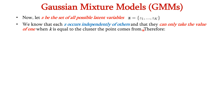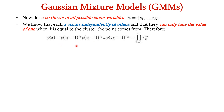Let z be the set of all possible latent variables, expressed as z = {z1 to zK}. Since each z occurs independently, P(z) can be written as the product from k=1 to K of pi_k raised to the power z_k. Whenever the exponent z_k is 1, it indicates the data point has high probability of belonging to that particular Gaussian k.